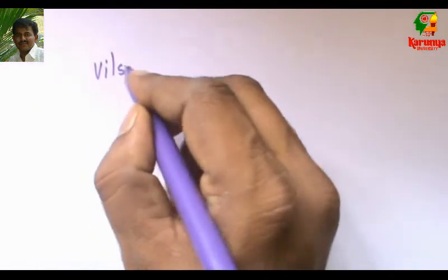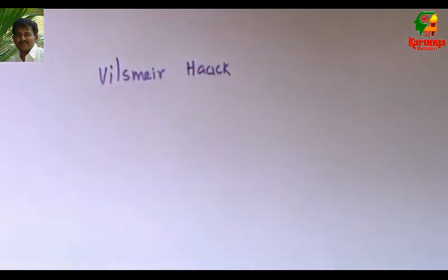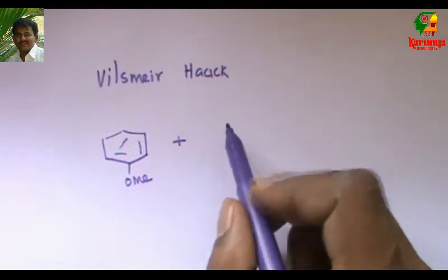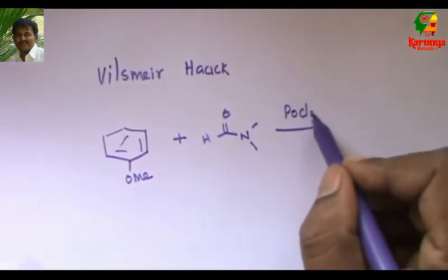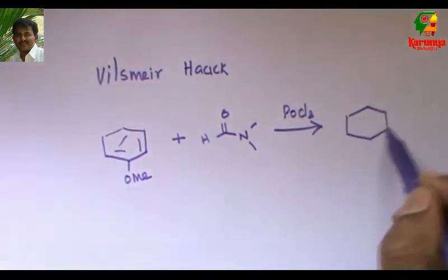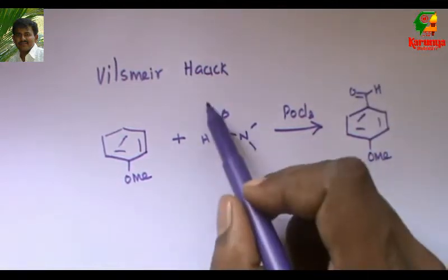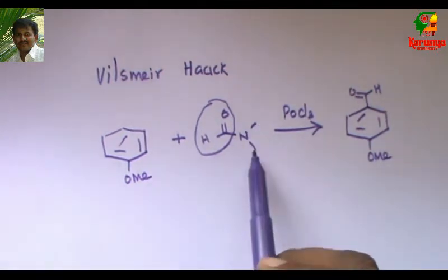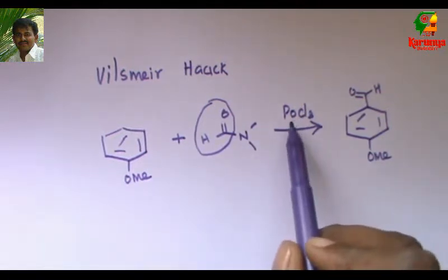Which one is correct? In order to solve this, you should know the Vilsmeier-Haack reaction. What is it? Generally, it is used to formylate an aromatic ring. When the aromatic compound is treated with DMF and POCl3, what we get is the formylated product. As such, dimethylformamide is not a formyl donor — it is converted into a formyl donor by adding POCl3.